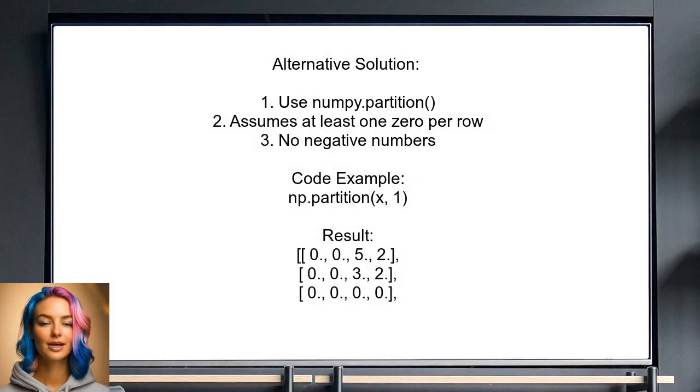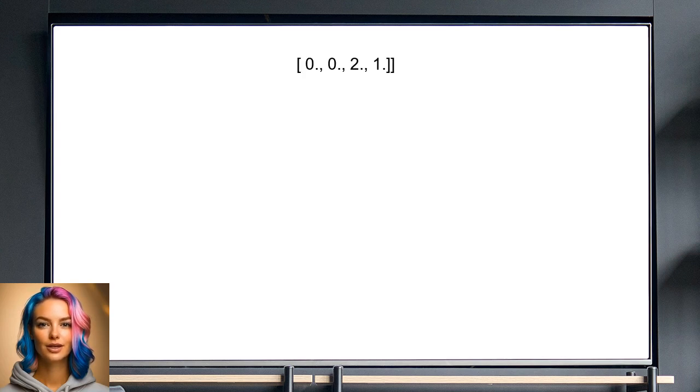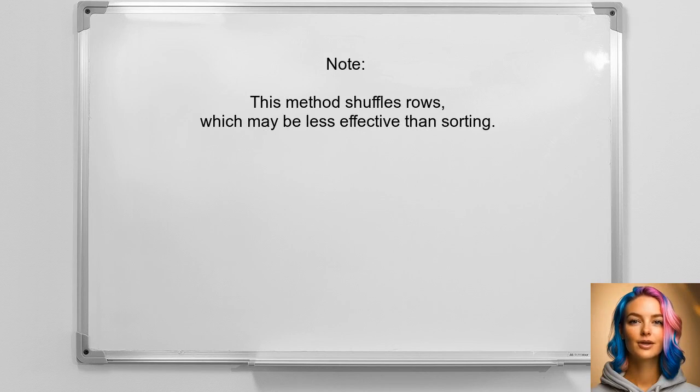An alternative approach suggested by a user involves using the NumPy partition function. They assume that each row contains at least one zero and no negative numbers. The partition function rearranges the elements, effectively moving the zeros to the left, while keeping the non-zero elements on the right. However, it's important to note that this method shuffles the rows, making it slightly less effective than a simple sort.